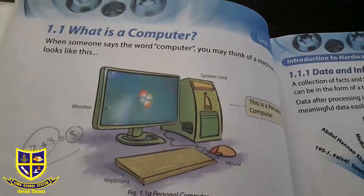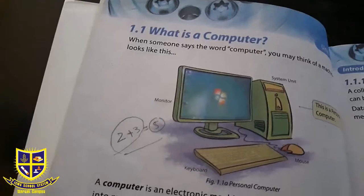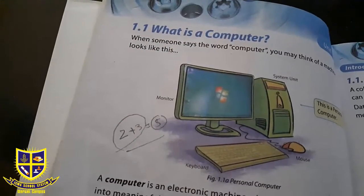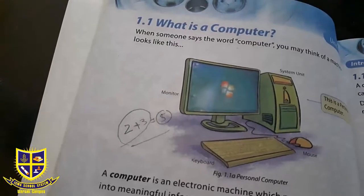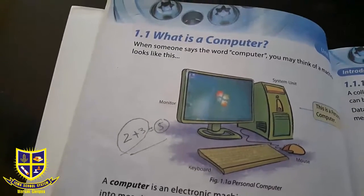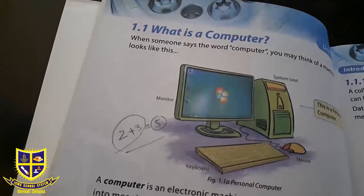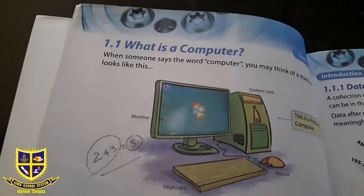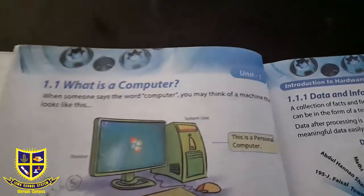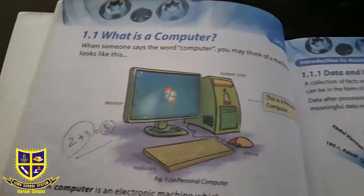कंप्यूटर की एक छोटी सी definition मैंने आपको दी थी कि computer is an electronic machine which processes raw data input into meaningful information, i.e., output, and stores output for later use. यह एक rough-सी definition है जो कि हम commonly use करते हैं।